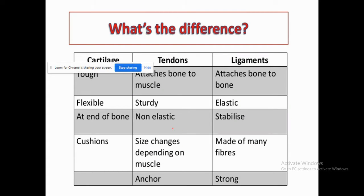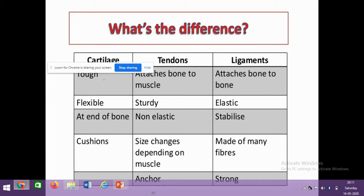Here is the difference between cartilage, tendon, and ligament. Cartilage is tough. Tendons attach bone to muscle and are non-elastic. Ligaments attach bone to bone and help stabilize joints. Cartilage is present at the end of bones.